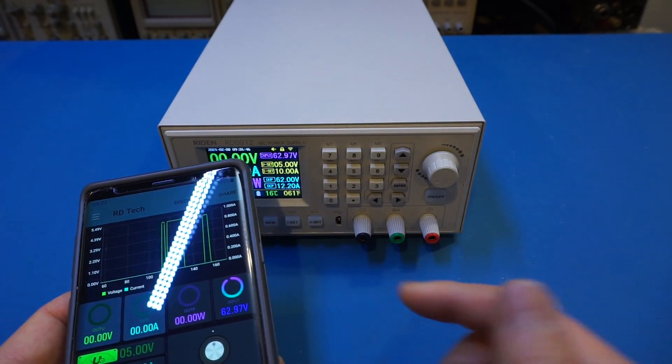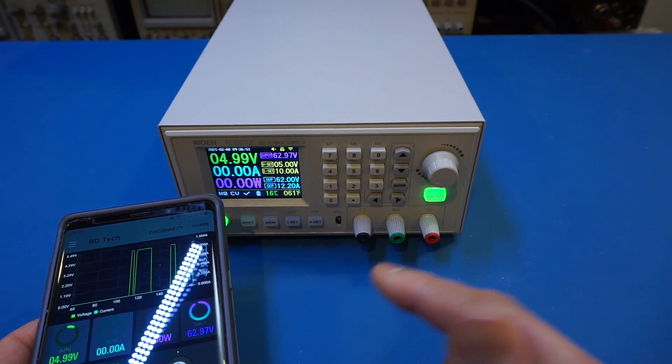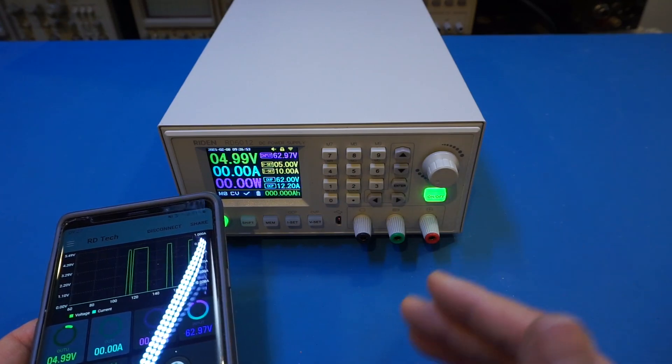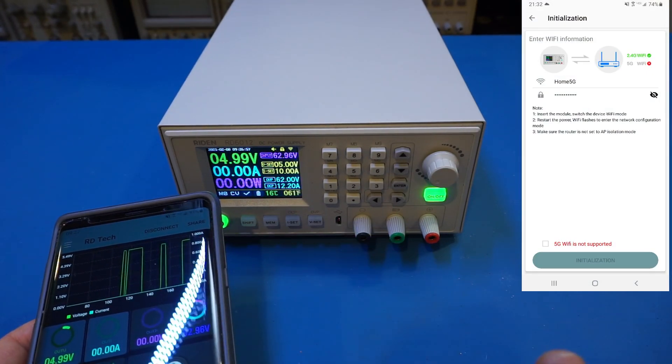Now, as I mentioned last time, the app has a little bit of an issue. You can only use it with a 2.4 GHz router, not a 5 GHz router that I have at home, so I had to actually switch it to 2.4 GHz.